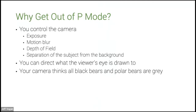The reason to get out of program mode is you get to control the overall exposure, the amount of motion blur, and the depth of field — whether your subject is in focus and the background is blurry. You can direct what the viewer's eye is drawn to, since the eye goes immediately to what is critically sharp. You control that by what you have in focus and how much you separate your subject from the background.